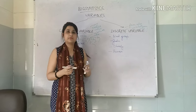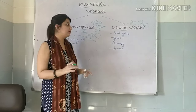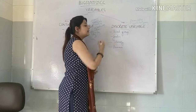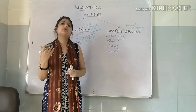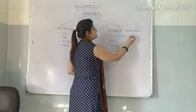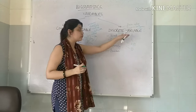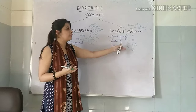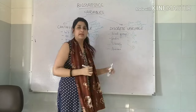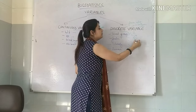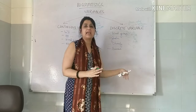Now, what are discrete variables? They take up fewer values and no in-between values. For example, blood group — if I ask you what your blood group is, you will answer A, B, AB, or O. You cannot lie in between A and B or between B and AB. You will have a particular blood group: A, B, AB, or O.